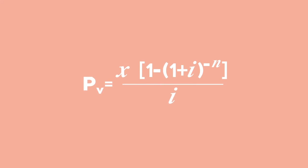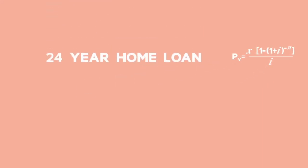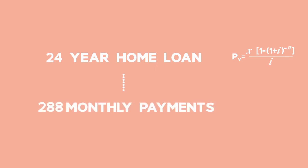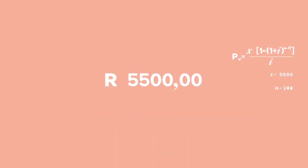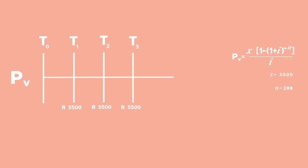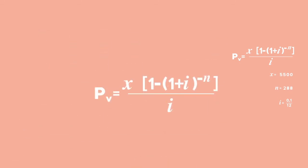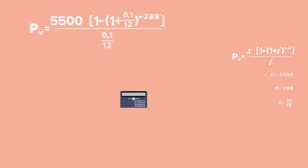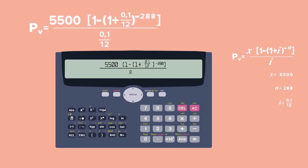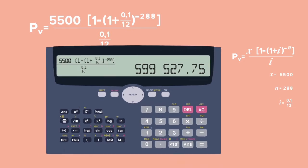To determine the size of the loan he can take, we will use the present value formula. A 24-year home loan implies 288 monthly payments of R5,500. The monthly interest rate will be 0.1 divided by 12. Substitute values for x, i and n into the present value formula, and use your calculator to work out the loan amount, which is R599,527.75.